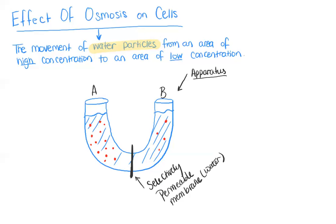Represented in blue here we have water — of course, the solvent — and represented in red, these red dots are the solute, which let's assume are salt. Now of course these solutes can be anything: they can be salt particles, sugar particles, proteins, vitamins, or minerals. But in this example I'm assuming that they are salt particles.